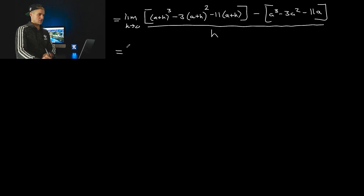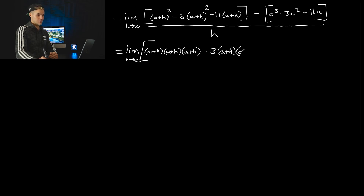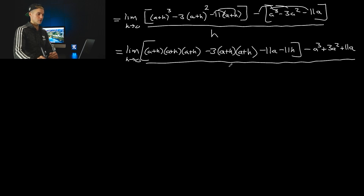Now to do this expansion: the limit as h approaches zero. The worst part is going to be a plus h to the power of three, because there are three of those brackets. You'll want to foil out two of them first, and then foil in the third one. Then you have minus three times two brackets of a plus h, and you can bring in the negative eleven right away to get negative eleven a minus eleven h. Then bring the negative in to get minus a cubed plus three a squared plus eleven a, all over h.